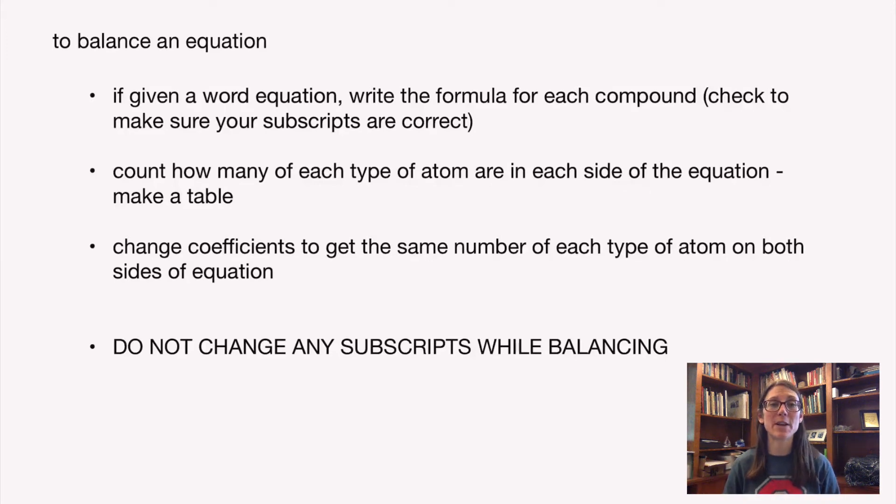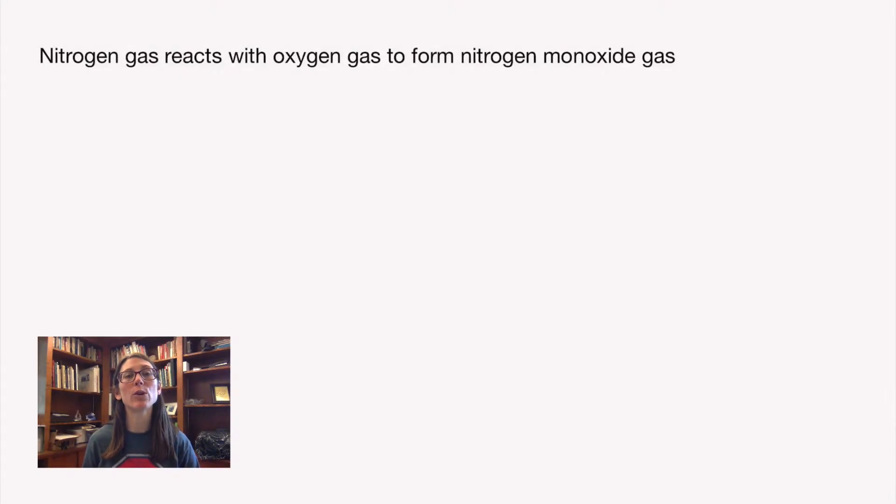Let's do some examples together. Here's an example where we're going from a word equation all the way to a balanced chemical equation. If we have nitrogen gas, nitrogen gas has the formula N2 because it is a diatomic molecule. It's reacting with oxygen gas which is O2 gas, another diatomic. And we're forming nitrogen monoxide gas.